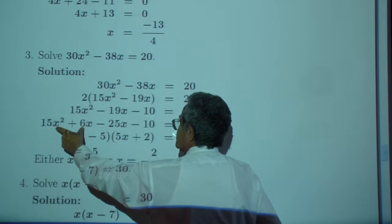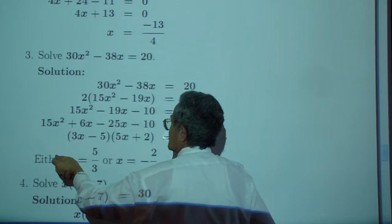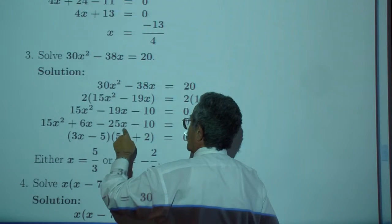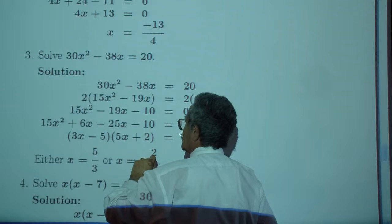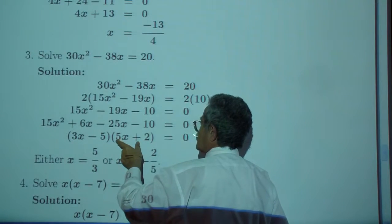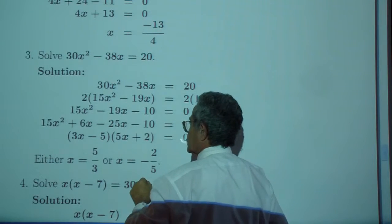From the first two terms, factor out 3X. And from the last two terms, factor out negative five. That gives you, you can factor out 3X minus five, and you're left with 5X plus two.